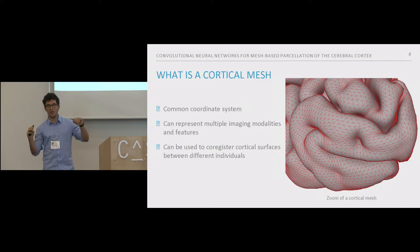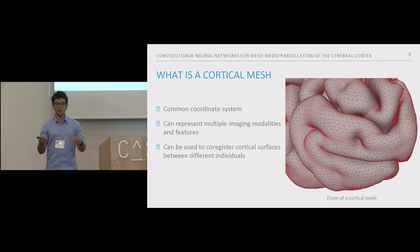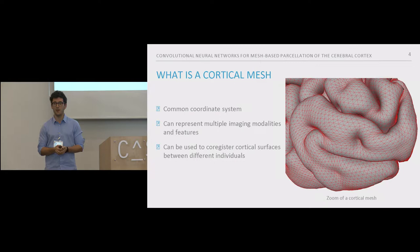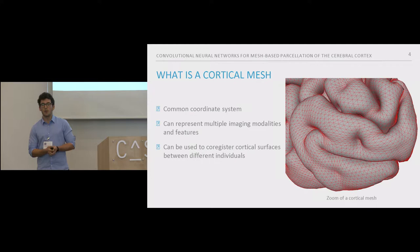This means that we can co-register data from two different subjects into the same structure, which facilitates processing and comparison between different individuals. These cortical meshes are commonly used to study structural and functional patterns of healthy brains as well as abnormalities in psychiatric or neurological conditions. What we propose to do here is to parcellate the cortex by operating directly with these cortical meshes.